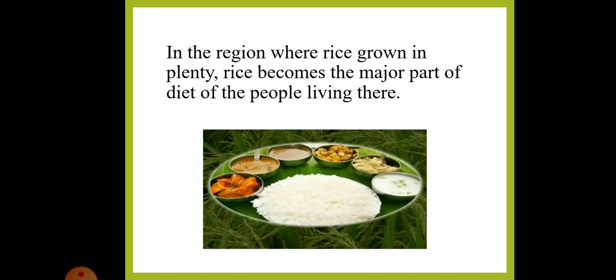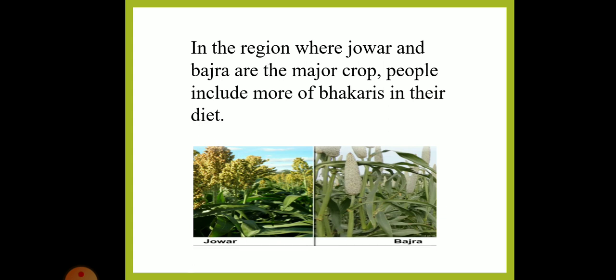Children, in the region where rice is grown in plenty, rice becomes the major part of the diet of the people living there. A variety of food items are prepared with rice in those regions. In regions where jowar and bajra are the major crops, people include more bhakris in their diet.